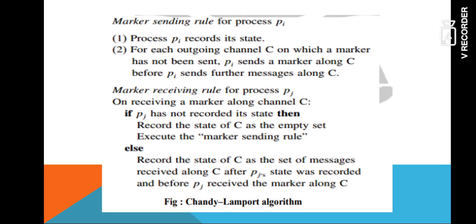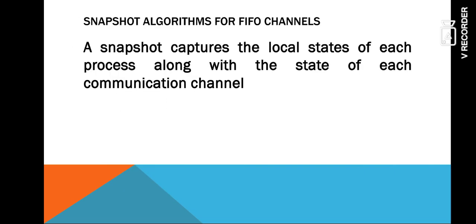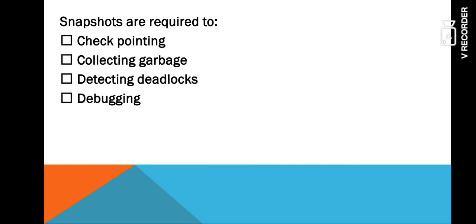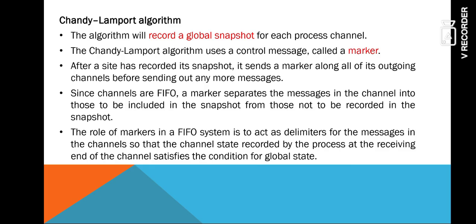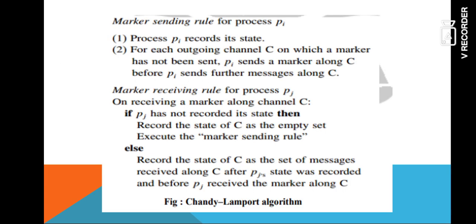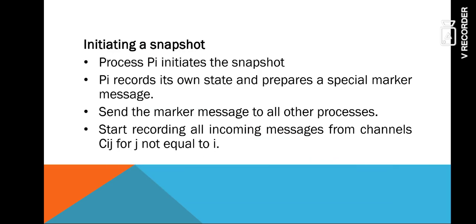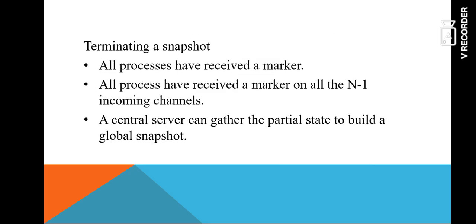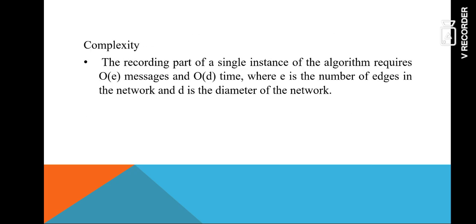To summarize: the snapshot algorithm for FIFO channel — a snapshot captures the local state of each process as well as the channel. These are the uses of the snapshot algorithm, and it is named the Chandy-Lamport algorithm. We have two rules: the marker sending rule and the marker receiving rule. We have three steps: initiating a snapshot, propagating a snapshot, and terminating a snapshot. The complexity of this algorithm requires O(e) messages and O(d) time.